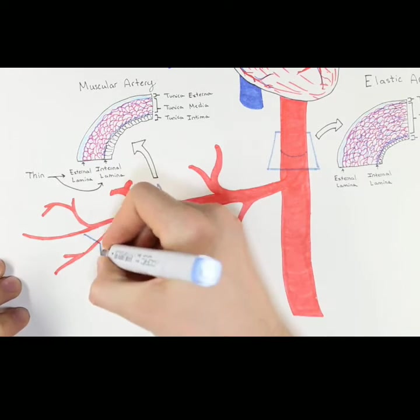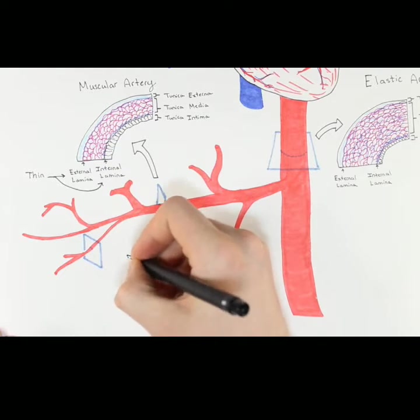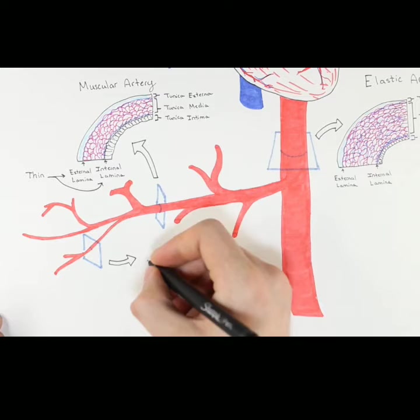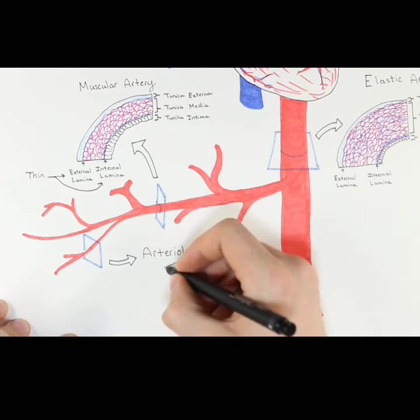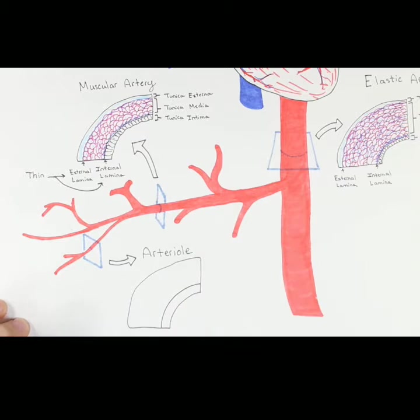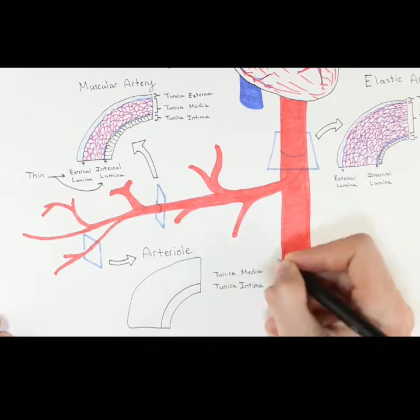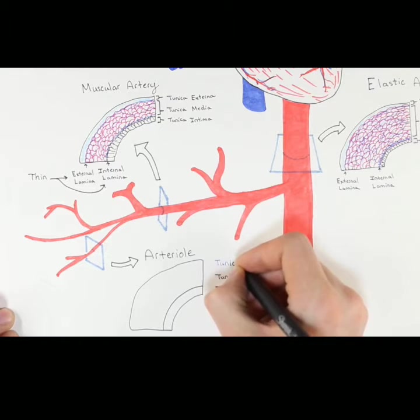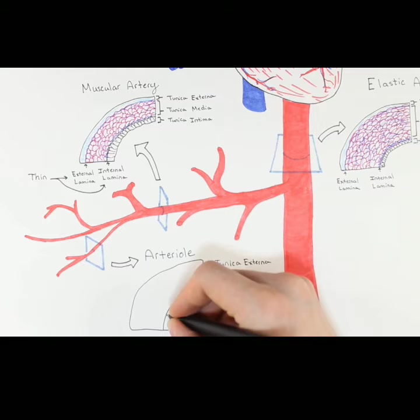The last type of artery that we will be discussing in this lecture is an arteriole. Let's go ahead and zoom in on an arteriole here. The arteriole is, in fact, the smallest artery and is between one to five tenths of a millimeter in diameter. Even though the arteriole is so much more narrow than the other arteries we've mentioned previously, it still has the three layers, the tunica intima, tunica media, and tunica externa.